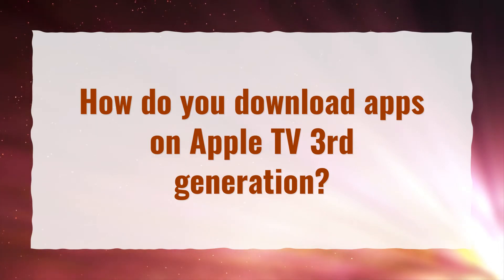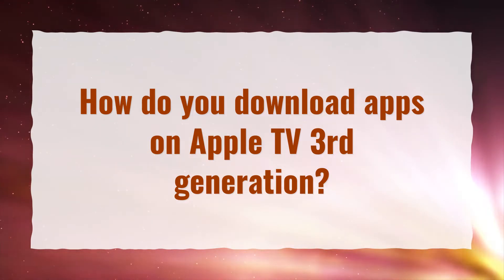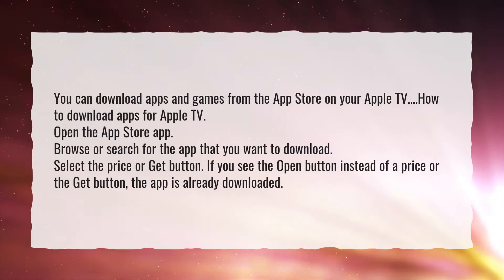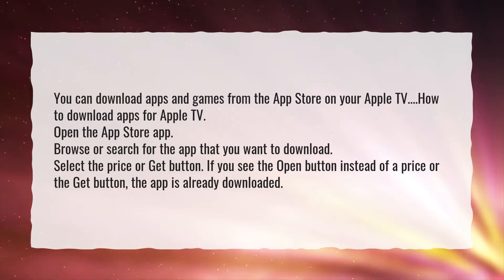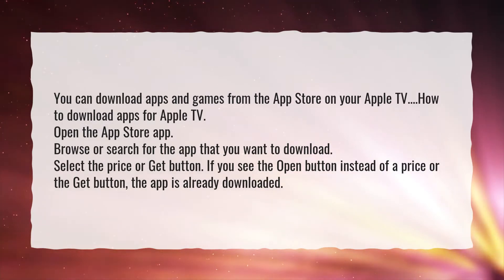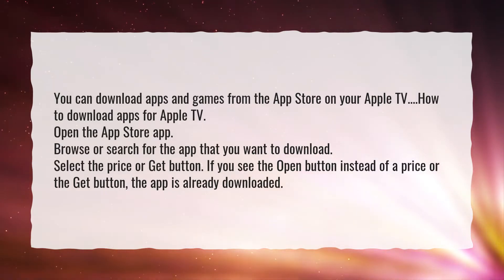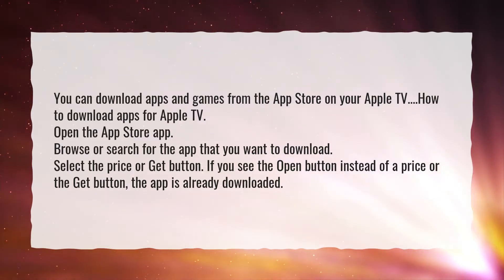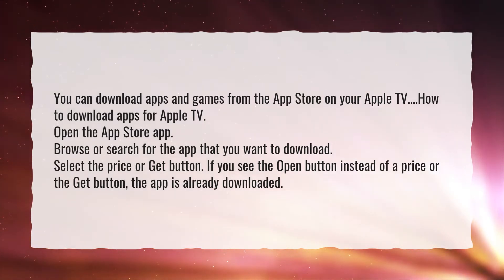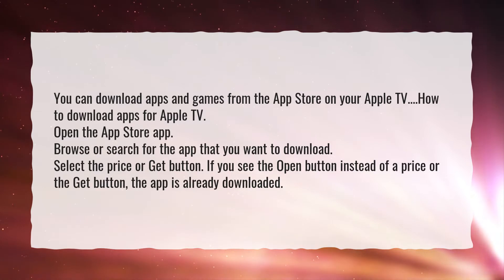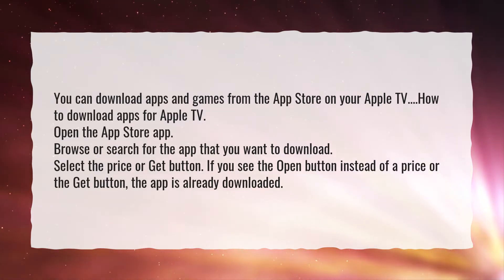How do you download apps on Apple TV 3rd generation? You can download apps and games from the App Store on your Apple TV. To download apps for Apple TV, open the App Store app, browse or search for the app that you want to download, then select the price or get button. If you see the open button instead of a price or the get button, the app is already downloaded.